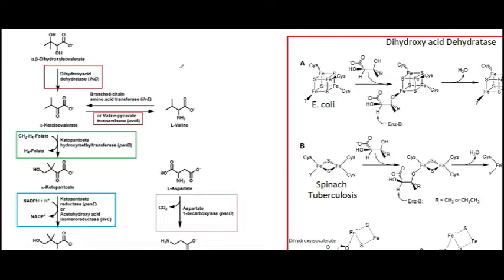In this video I'm going to talk about the biosynthesis of vitamin B5, also known as pantothenate or pantothenic acid, depending on the protonation status. We first start with alpha-beta dihydroxy isovalerate and turn that into alpha keto isovalerate by removing this hydroxyl group, or we can take valine and with a transaminase switch this amine group out for a ketone oxygen.